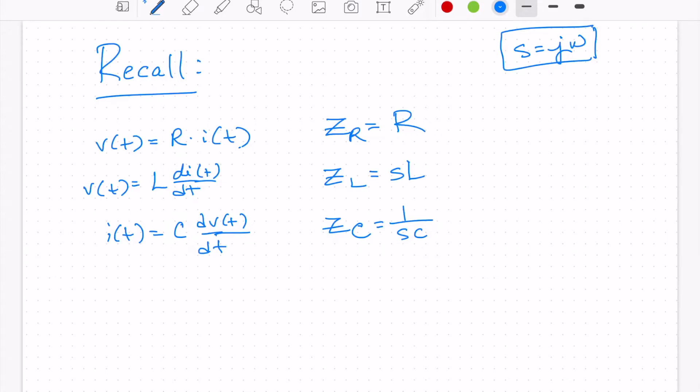Taking these and putting them together with our relationship, we can generalize Ohm's law. So for resistors, we still have V of, let's go ahead and put it in Laplace domain. V of S is equal to R times I of S. These are going to be capitals.